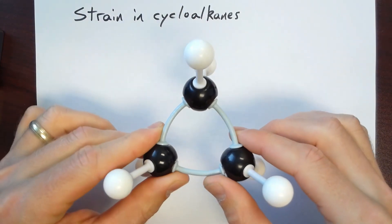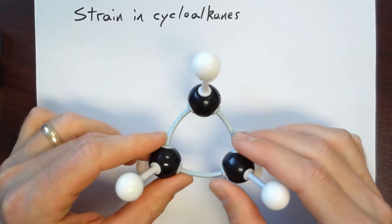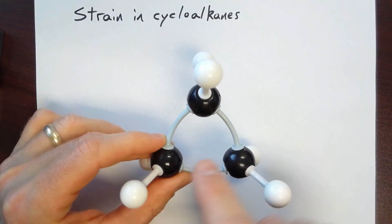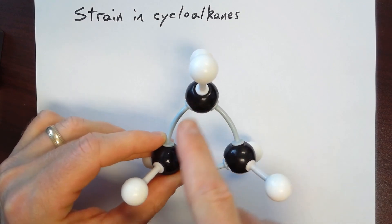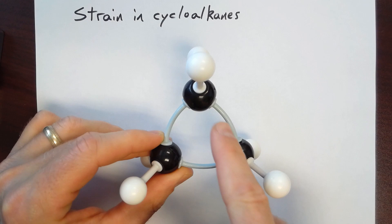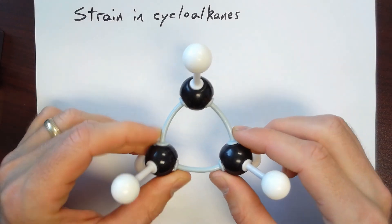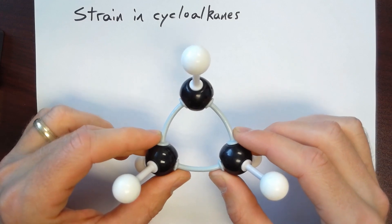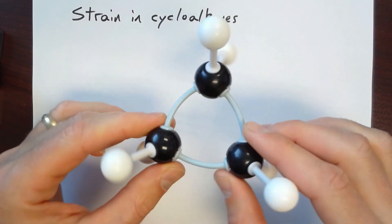Recall that carbon, when it's tetrahedrally coordinated, wants bond angles that are 109.5 degrees. But in cyclopropane, this angle is 60 degrees. And so there's a lot of angle strain in cyclopropane that adds to a destabilized molecule.